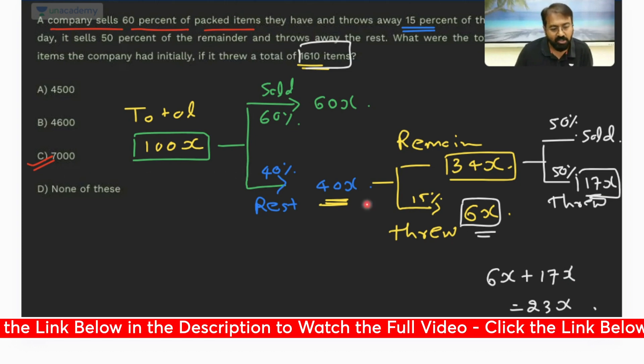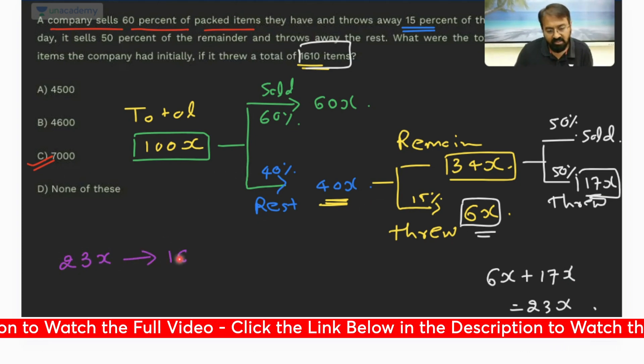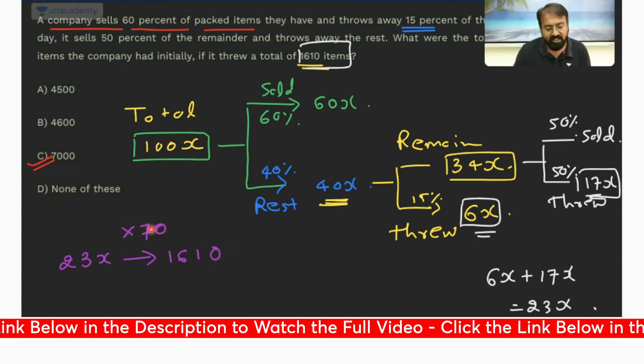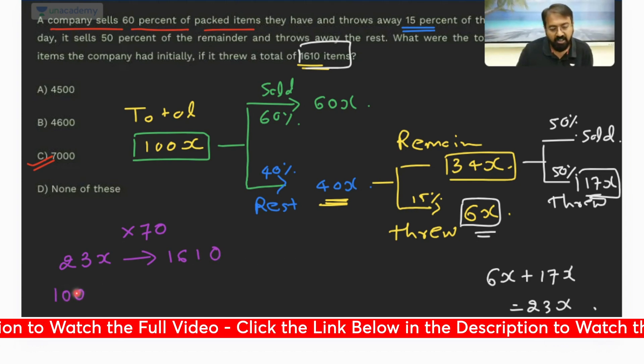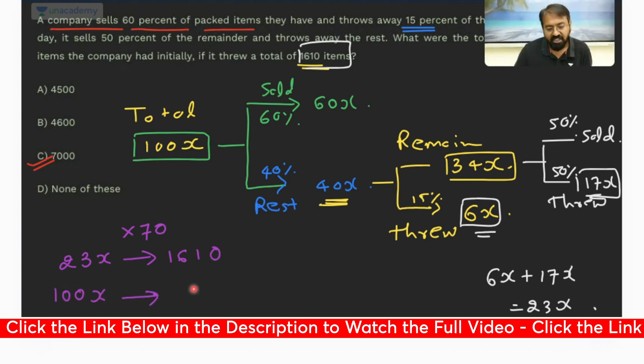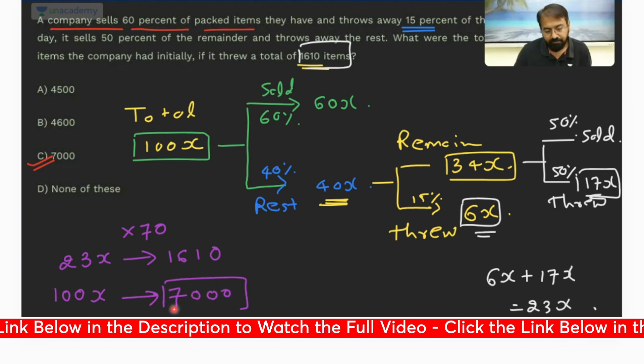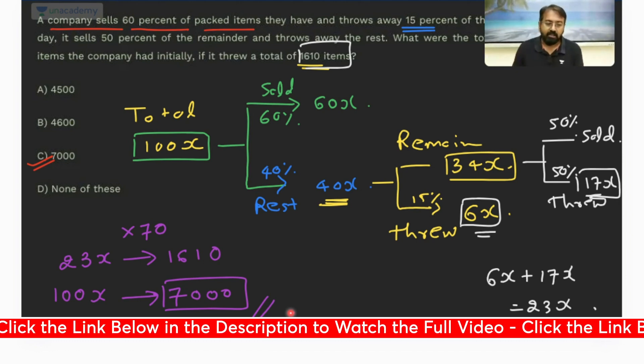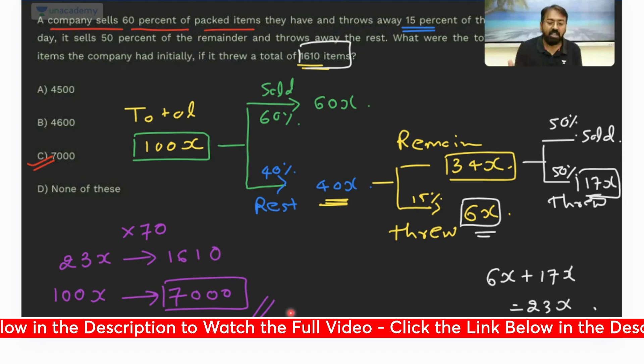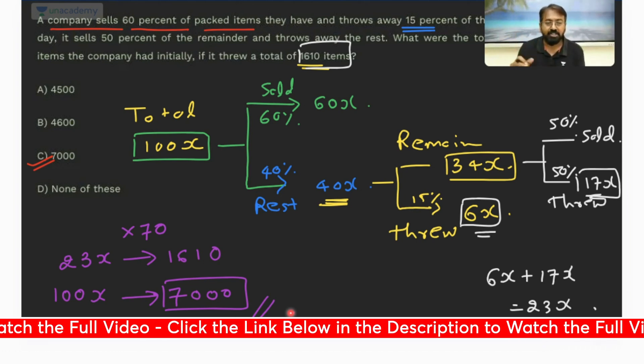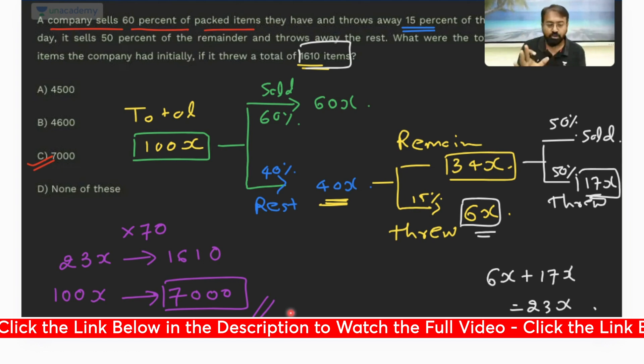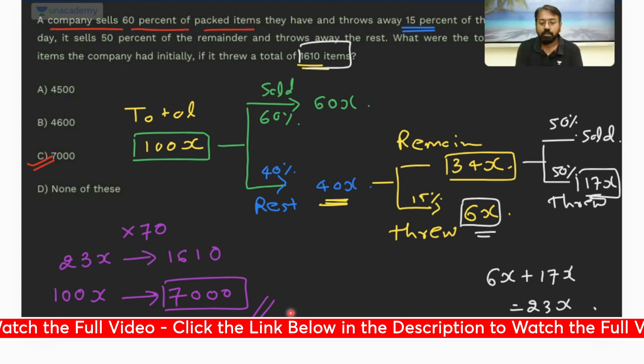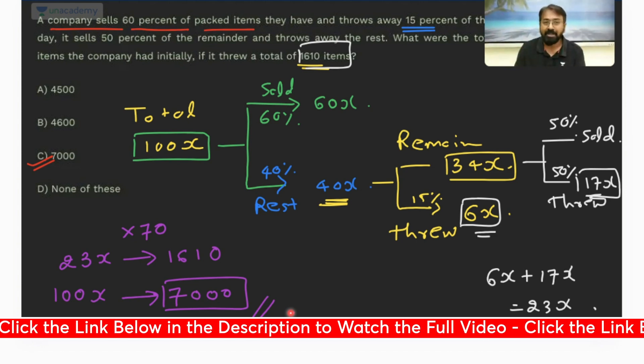We are told that the company has thrown away 1610 items, so 23X is equal to 1610. What is the multiplying factor? 23 into 70 will be 1610, so 100X will be equal to 100 into 70, that's going to be 7000. Are we all clear? At the initial stage, at the beginning of the preparation, you should be able to tackle such questions easily. Make sure that you are getting 100% questions correct. That should be your target when I give you such DPP.